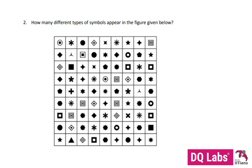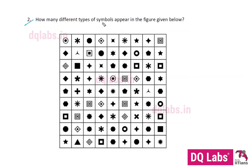Question number two: how many different types of symbols appear in the figure given below? There are a bunch of symbols — we should find out the number of unique symbols that appear, because some of them are repeated. So the number of different symbols, we start counting from this way in proper order.